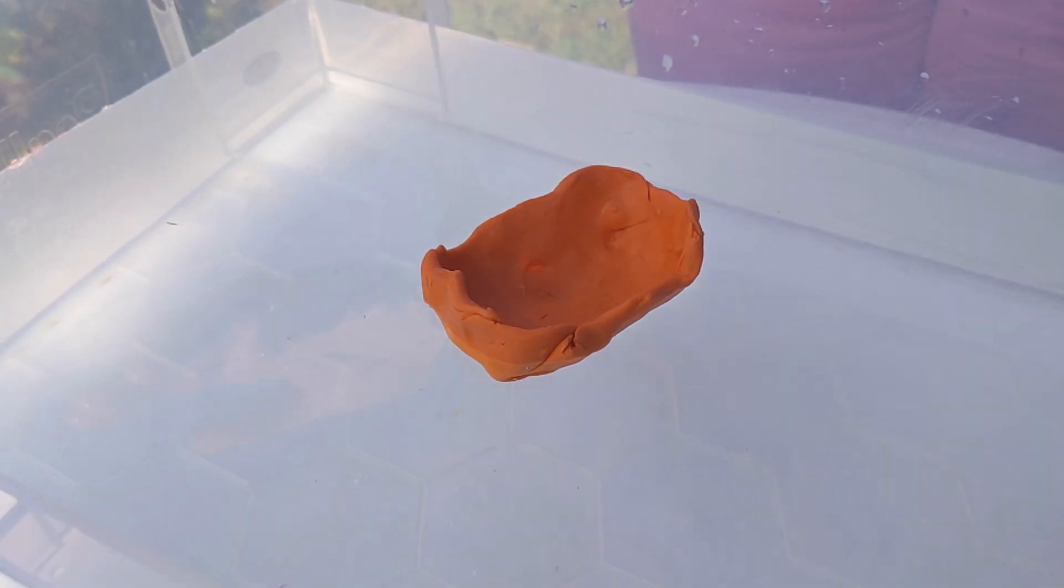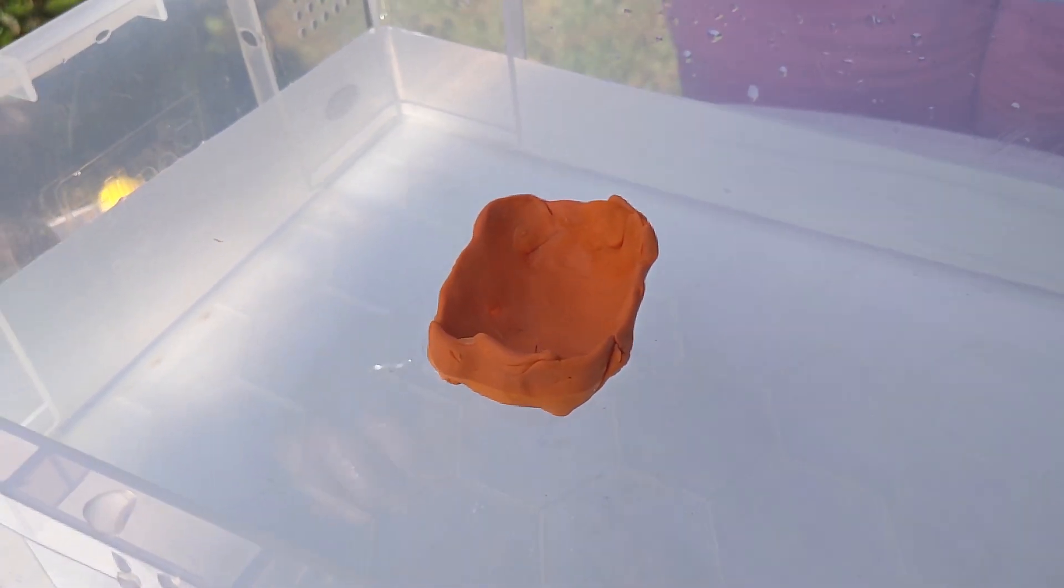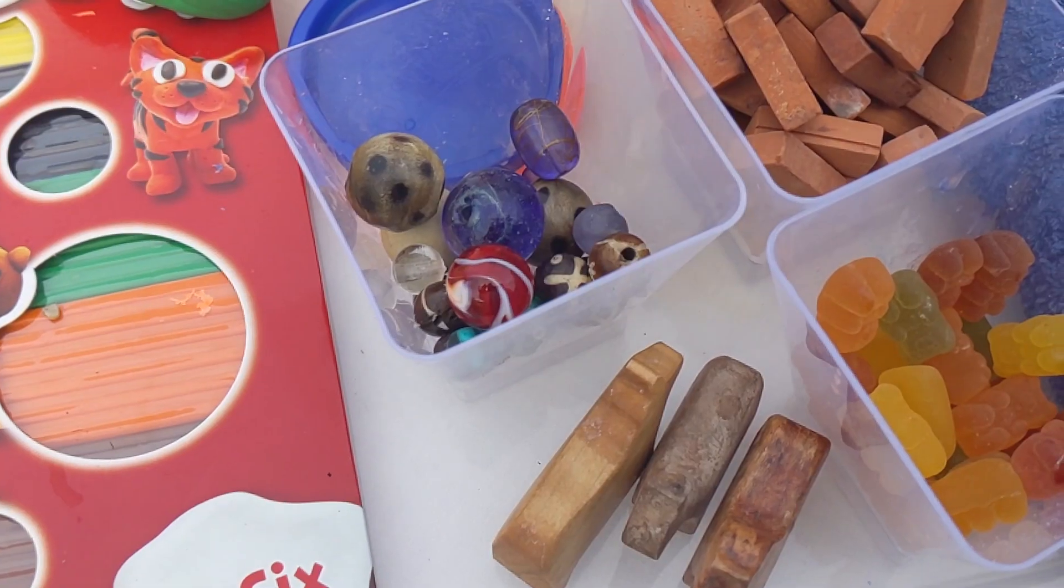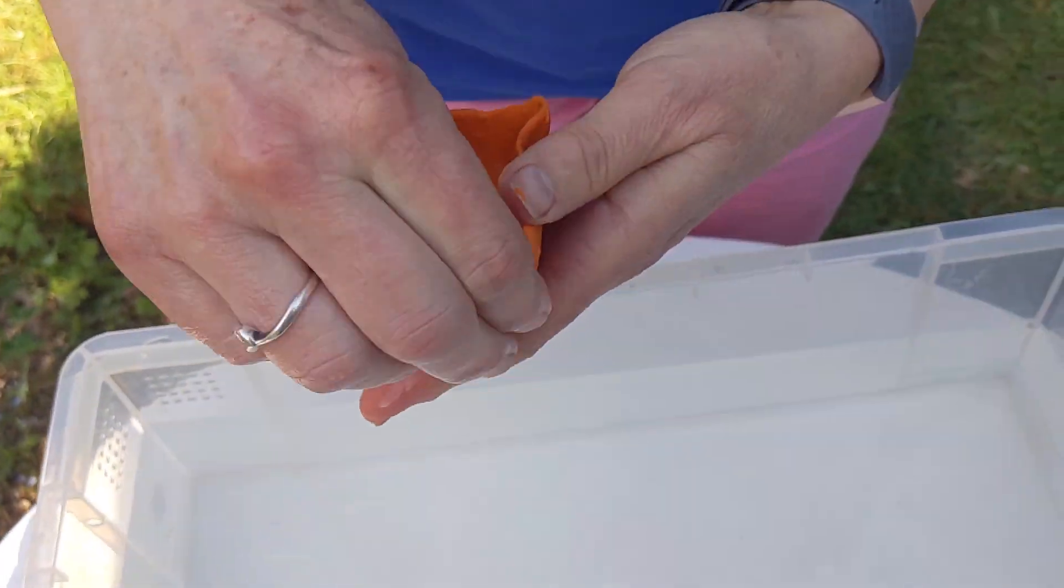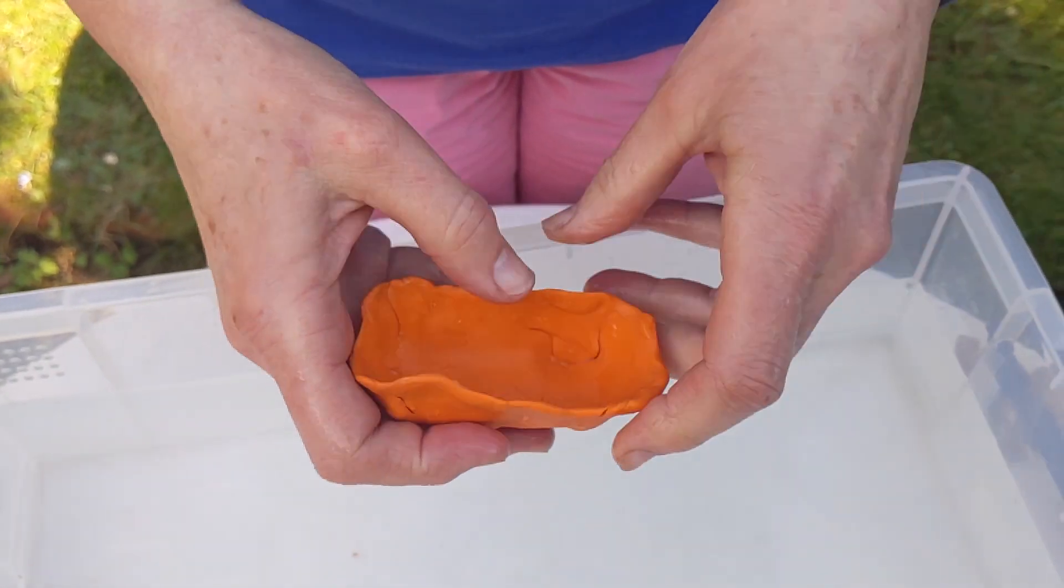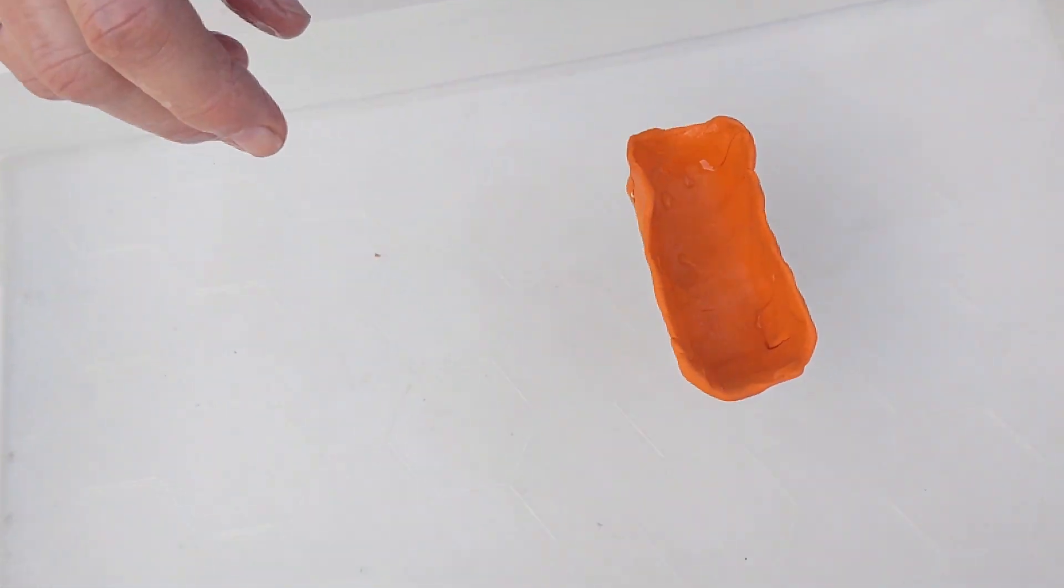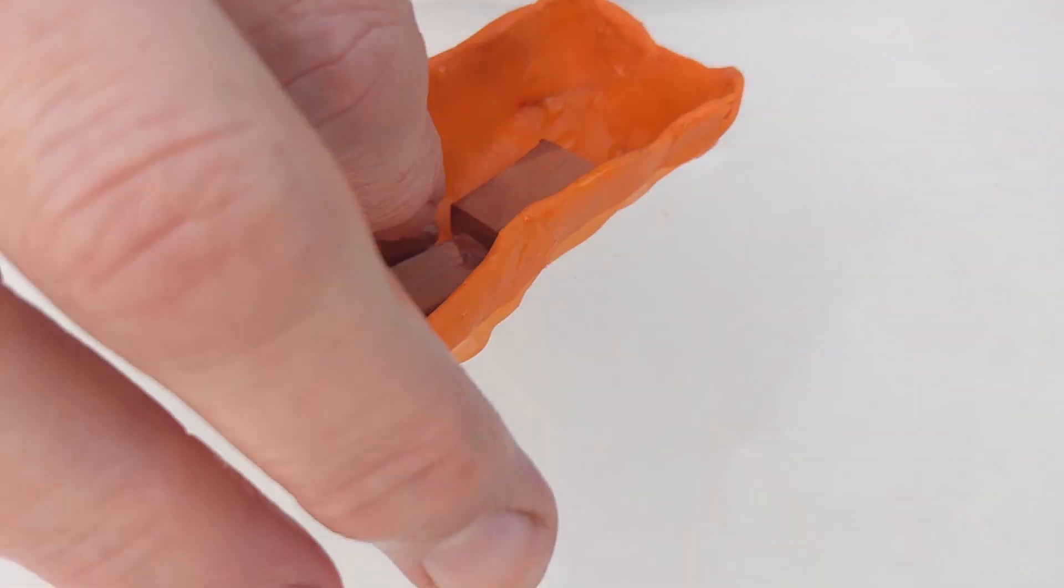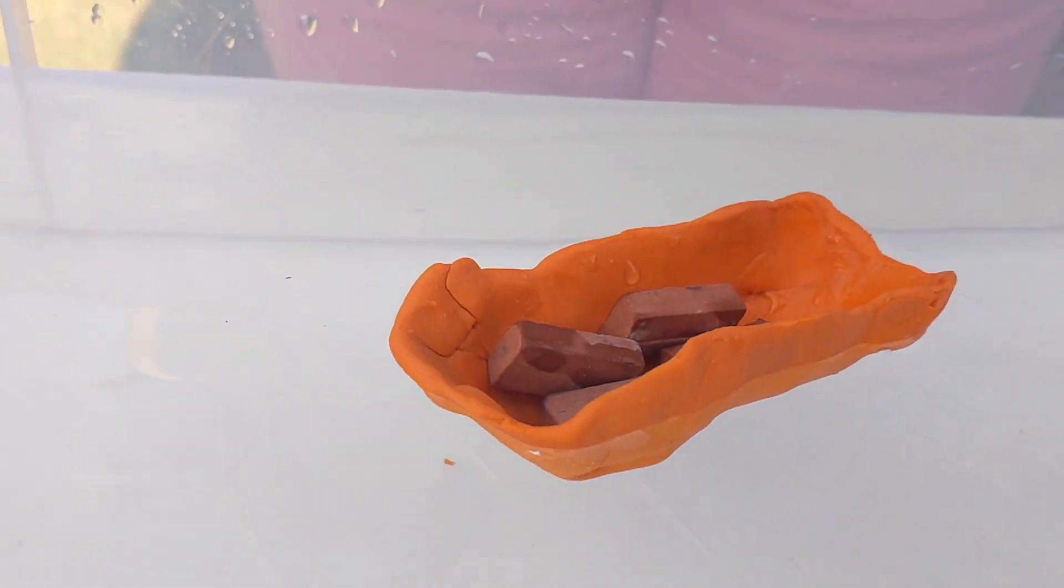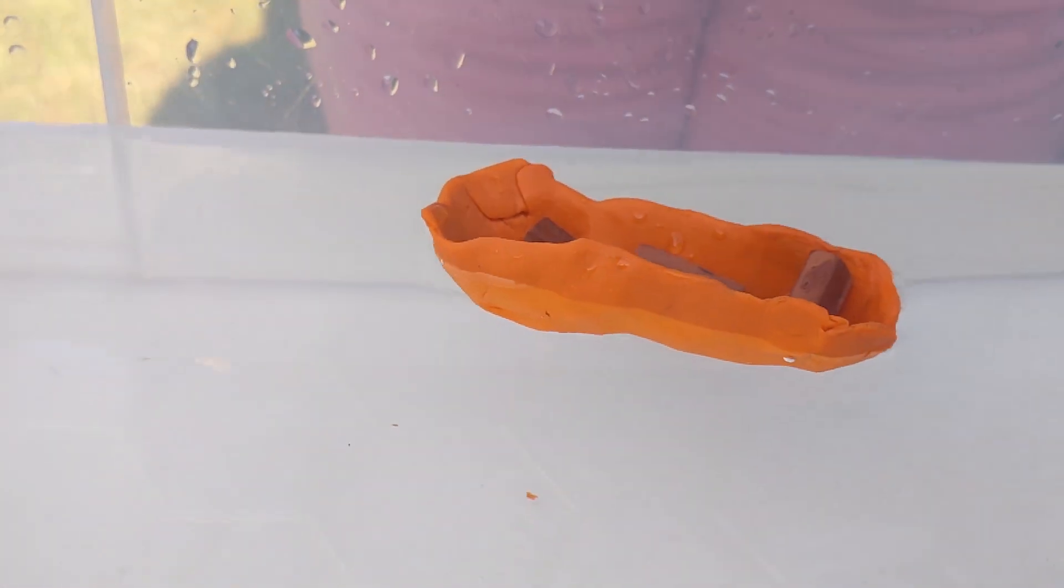Now that you have a boat we're going to test how good it is at carrying cargo. Your cargo will be the selection of small toys you gathered together earlier. Place your boat in the water and one by one place the toys into the boat counting them as you go. Remember to balance the boat to stop it from capsizing.